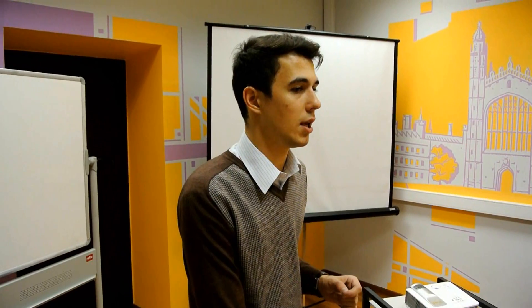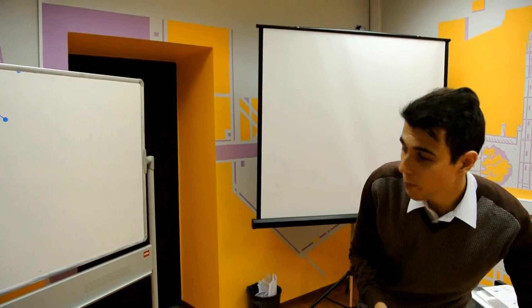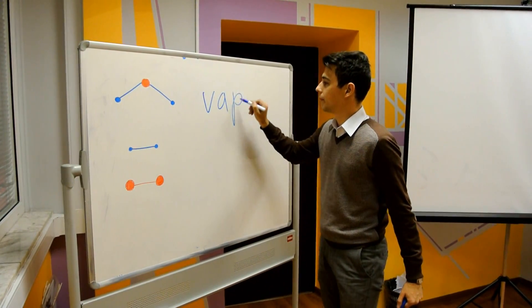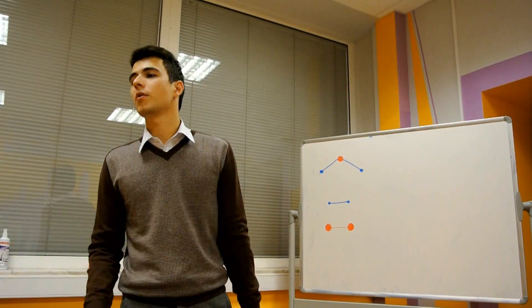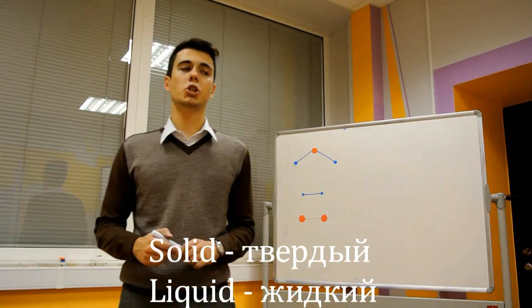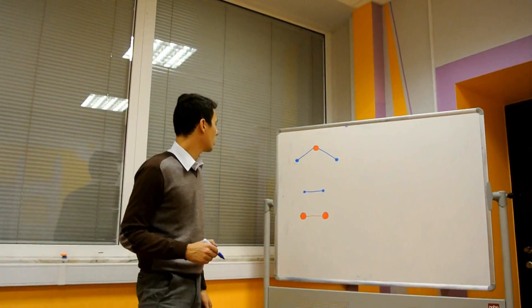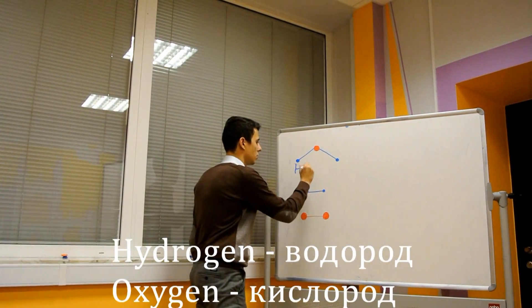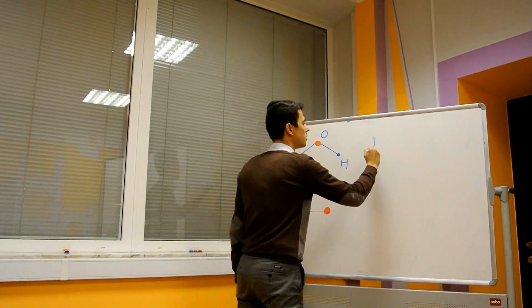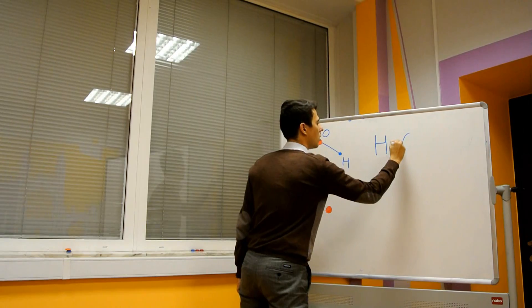And do you probably have an idea in which physical states can we find water? Ice. Vapor — that's good, but better write down the English variant. Vapor. So you can find water in three physical states: in a solid state known as ice, liquid state, and gaseous known as vapor. Water is a complex compound which consists of two hydrogen atoms and a single oxygen atom. Therefore, its formula is H2O.